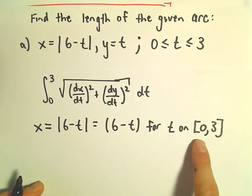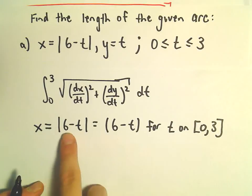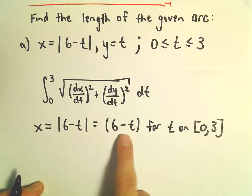Because if you take any value between 0 and 3, the 6 minus t will stay positive. So we can just remove the absolute value.